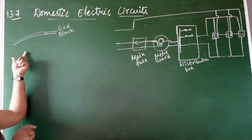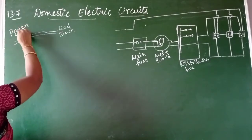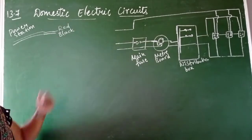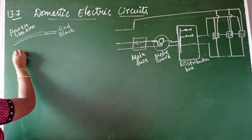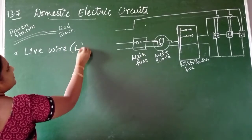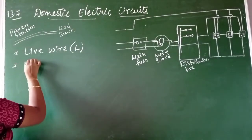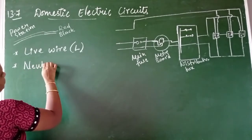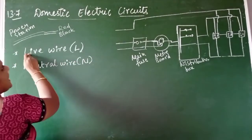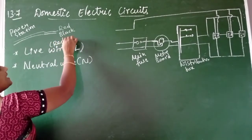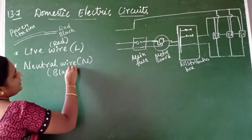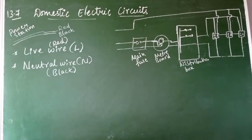The cable coming from the power station, either through electric poles or underground cables, consists of two types of wires. The one which is red in color is called a live wire, represented by the letter L. The other is called a neutral wire. The live wire has red insulation, whereas the neutral wire has black insulation.